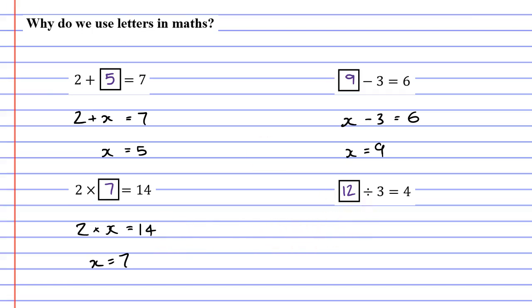Moving on to our final example, we would once again just replace the box with an x. So this would become x divide 3 equals 4, and x would have to equal 12 since 12 divide 3 equals 4.